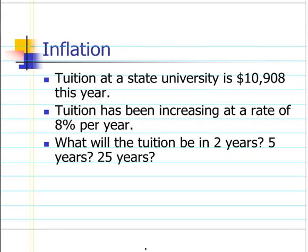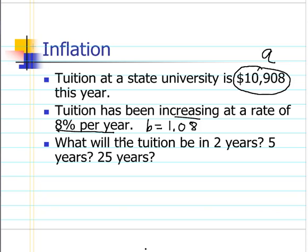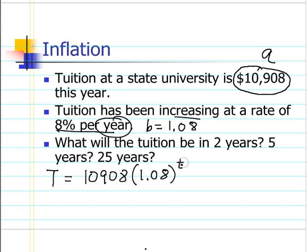Let's use our exponential growth and decay models for two sample problems. For the first, we use inflation of college tuition — an exponential growth situation. The current cost for a state university is $10,908; that's our value of a. We're increasing at 8% per year, so our b will be 1.08. Our model is: T for tuition equals 10,908 times 1.08 to the t power, where t is the number of years.